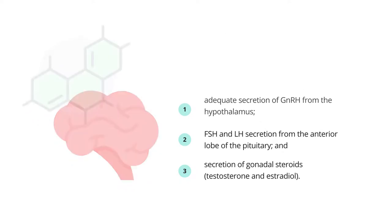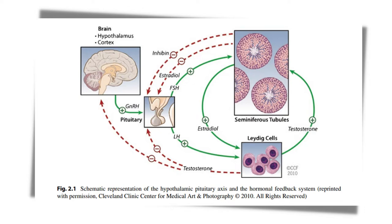This figure is a schematic representation of the hypothalamic-pituitary axis and the hormonal feedback system. The secretion of hypothalamic gonadotropin-releasing hormone, or GnRH, stimulates production of luteinizing hormone LH and follicle-stimulating hormone FSH by the pituitary. LH is transported in the bloodstream to the testes, where it stimulates Leydig cells to produce testosterone.